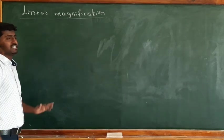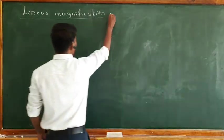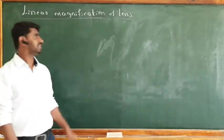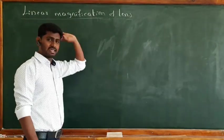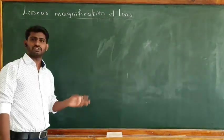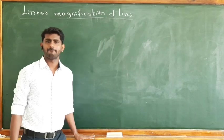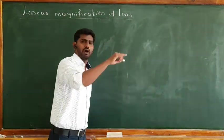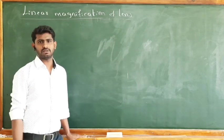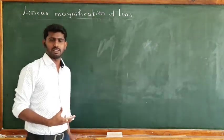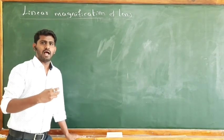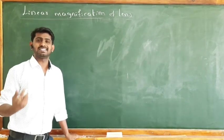The next topic is linear magnification of a lens. You already know this concept from the study of mirrors — linear magnification of a mirror. The definition of linear magnification is the ratio of the size of the image to the size of the object.